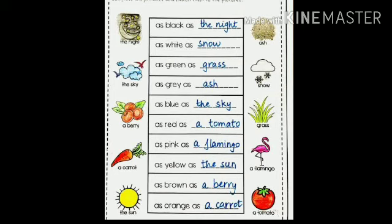Here you can see: as black as the night, as white as snow, as green as grass, as gray as ash, as blue as the sky, as red as a tomato, as pink as a flamingo, as yellow as the sun, as brown as a berry, as orange as a carrot. All the different colors are compared with different unlike things — such comparisons are called similes.